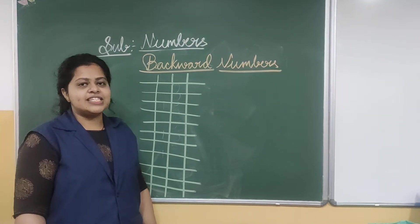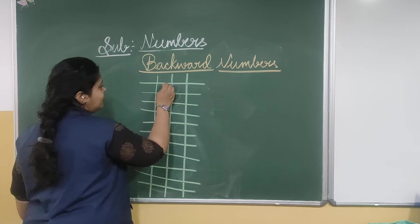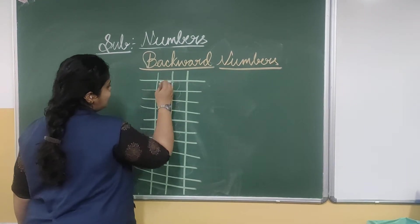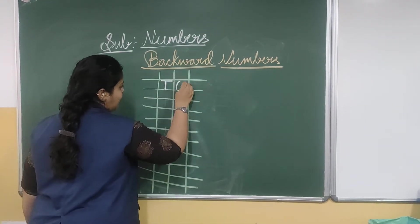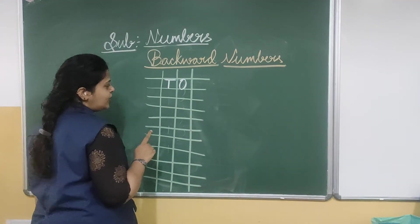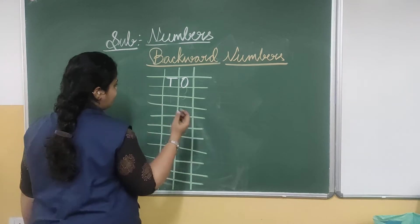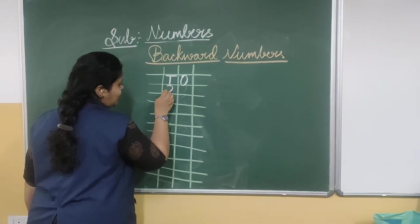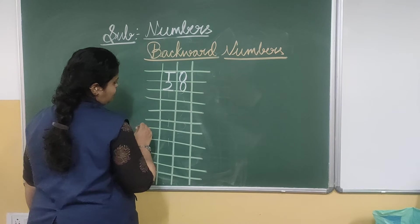So let's get started — how to write it. Write the place values first: T is for 10's and O is for 1's. As we all know, we are going to start backward numbers from 20 to 11. So write 2 under the 10's place and 0 under the 1's place.